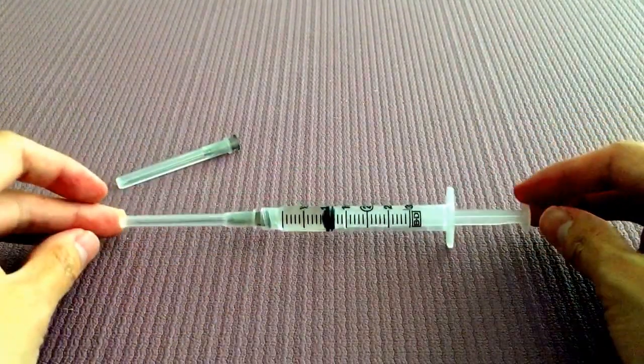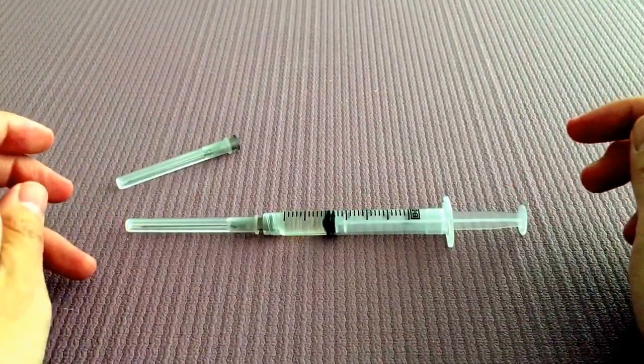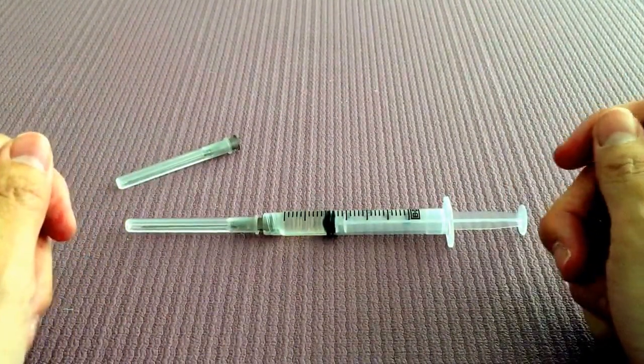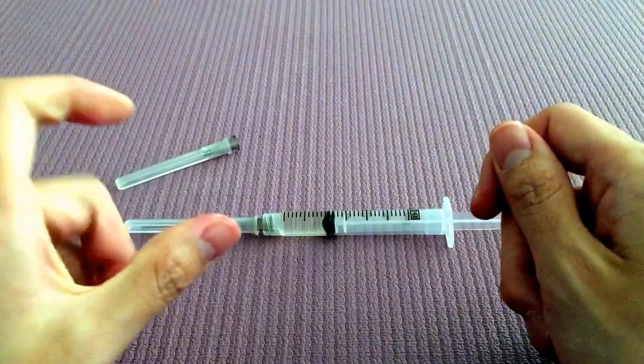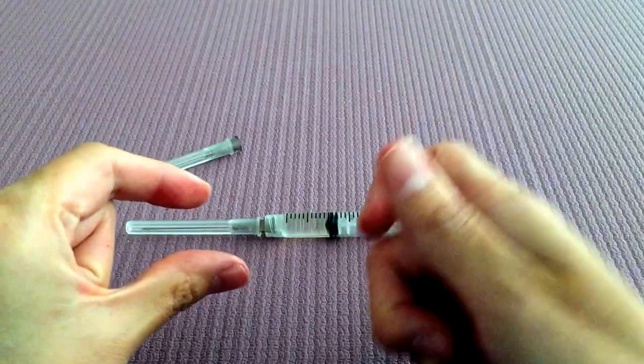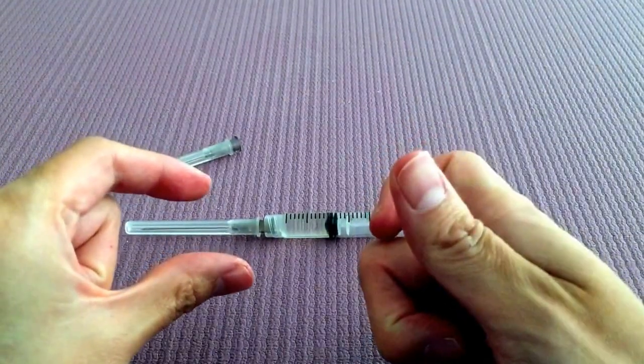So some tips for the injection itself. You want to pick the upper outer quadrant of your buttocks. You want to pinch it real hard. And then just go in straight and fast. And then inject the medication.